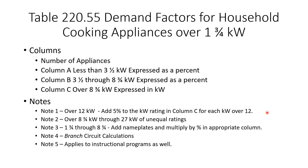For example, say you have one 14-kilowatt appliance. One appliance in Column C gives you 8 kilowatts off the table. Since it's 14 kilowatts — two kilowatts over 12 — you increase the 8 by 10 percent (2 × 5%). So 8 plus 10% equals 8.8 kilowatts.